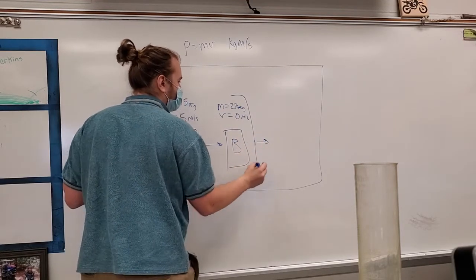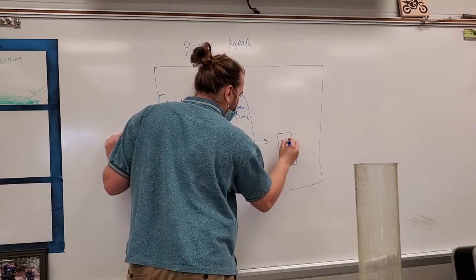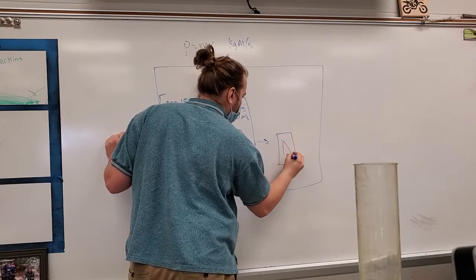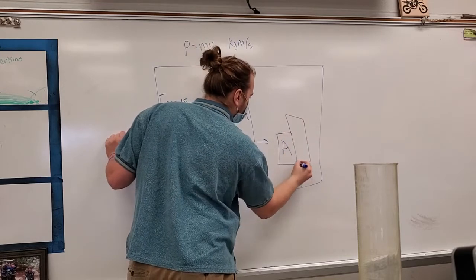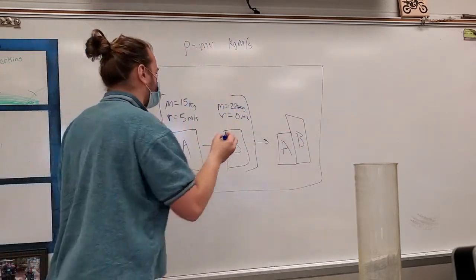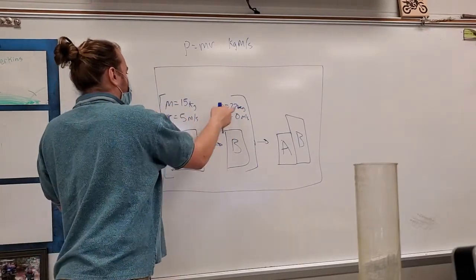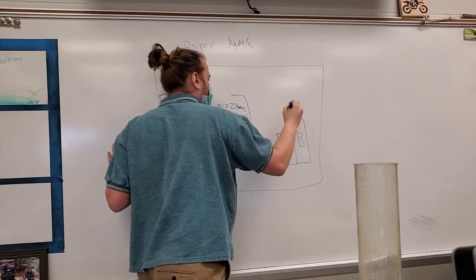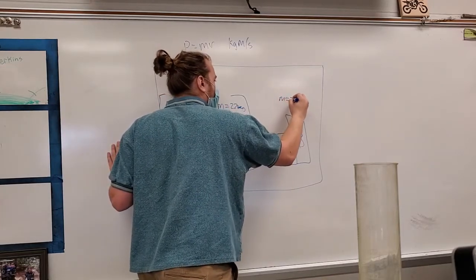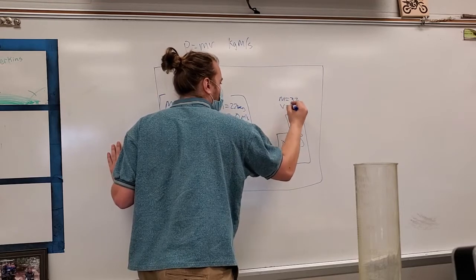And it goes to the final here. They stick together, and they create mass AB. They stick together, and it has a total mass. We're going to just add these up. 15 plus 22 equals 37. What is the final velocity?